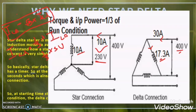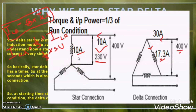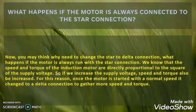One important question arises: why do we have to do all this — making the motor first in star and then converting to delta? Why can we not keep the motor winding in star connection and let the motor run? In that case, the starting current of the motor will be less, so the problem seems solved.